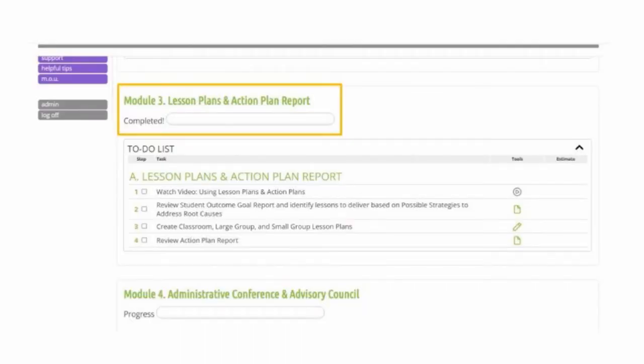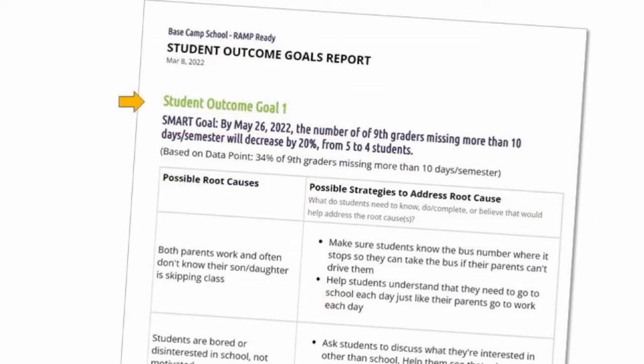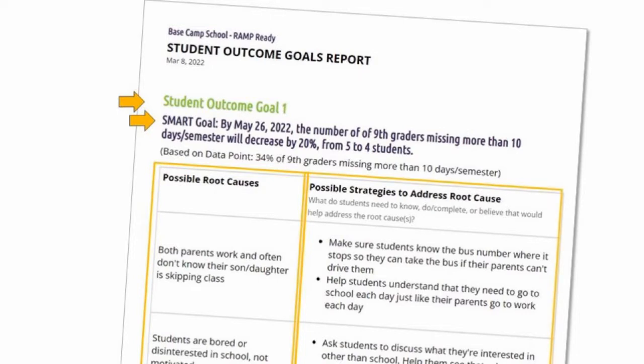Your annual update is not a list of every good thing you're planning to do this year, but it puts the spotlight on a handful of key priority focus areas that you hope to impact during the school year. Now, the first step in Module 3 is to go to Step A2 and pull up your Student Outcome Goals report. This summary document shows you your two or three student outcome goals, the text of your SMART goals, a table listing some possible root causes on the left, and some possible strategies to address the root causes on the right. Your strategies on the right side are going to become your student learning objectives in your lesson plans, which will help students learn new information, new skills, or develop a new mindset to address the root causes, ultimately resulting in improved data outcomes in your SMART goal.